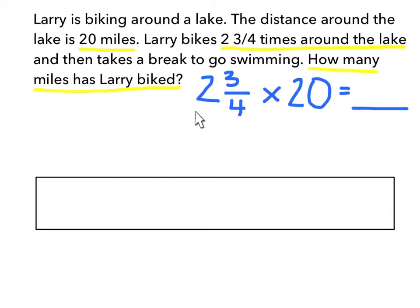He didn't quite go 3 times because he only went 2 and 3 fourths. But if he had gone 3 times around the lake, that would be 60 miles. So I know my answer should be somewhere between 40 and 60 miles, and I am going to keep that in mind as I am solving to make sure my answer is accurate.